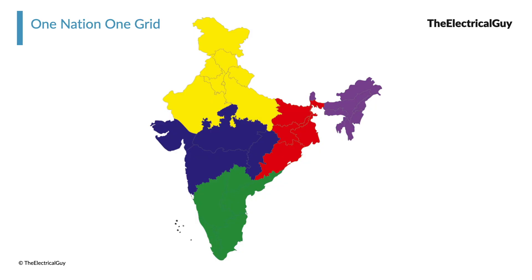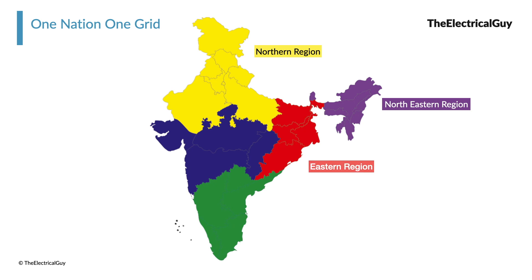So in the early nineties, it was conceptualized to connect different regions of India together so that we can have better management of electrical power. For planning and operational purposes, India is divided into five regions, namely the Northern Region, North Eastern Region, Eastern Region, Southern Region and Western Region.